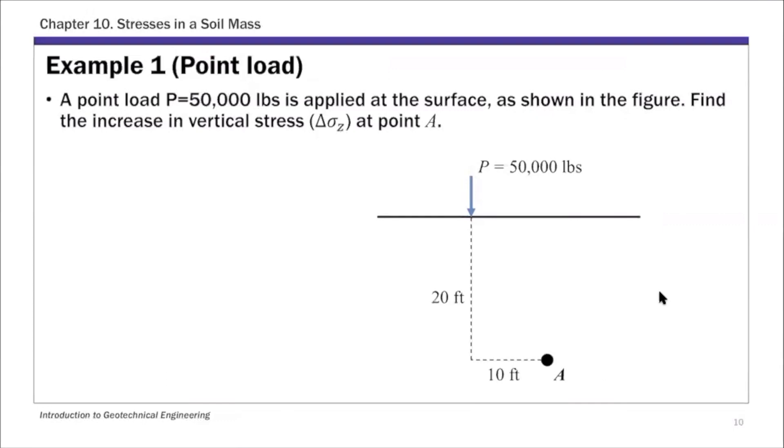We have a point load P equals 50,000 pounds applied at the surface. We're going to calculate the stress increase at point A. The depth is 20 feet, and that R, the horizontal distance from the point load to point A, is 10 feet.